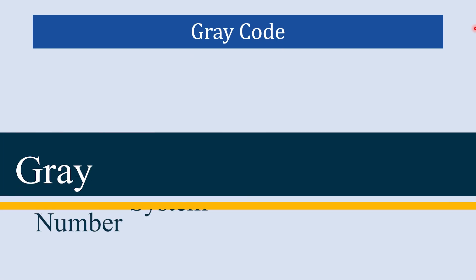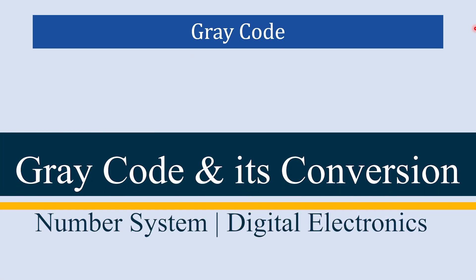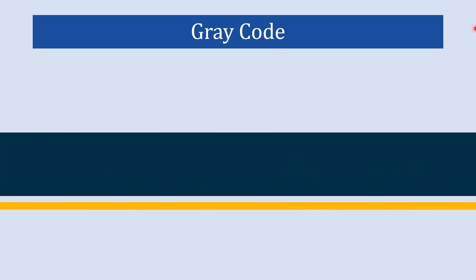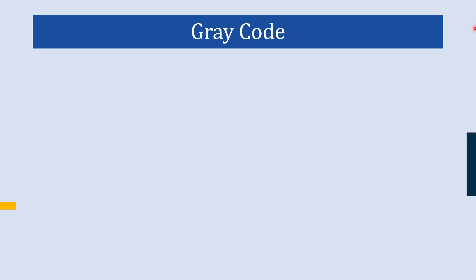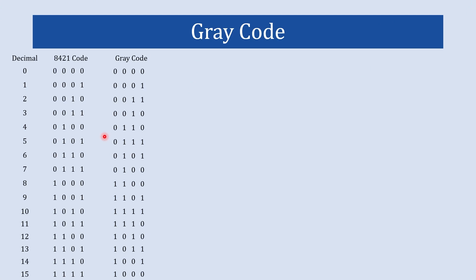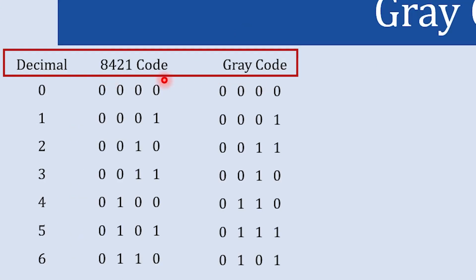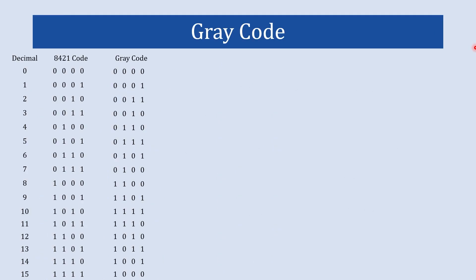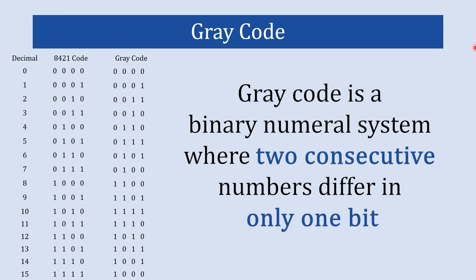In this video we are going to learn about gray code and the conversion of gray code. Here you can see a table where we have represented gray code corresponding to 8421 code and decimal numbers. Basically, gray code is a binary numeral system where two consecutive numbers differ by only one bit.